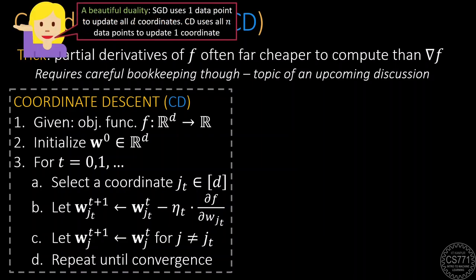Note the beautiful duality between SGD and coordinate descent. SGD uses a single data point to compute a descent direction for all d coordinates of the model, whereas coordinate descent uses all n data points to compute the descent direction for a single coordinate.